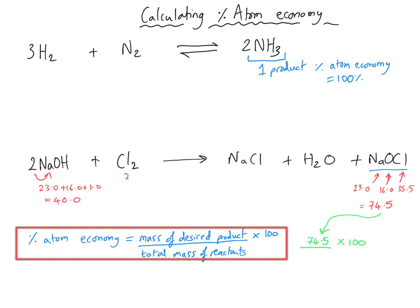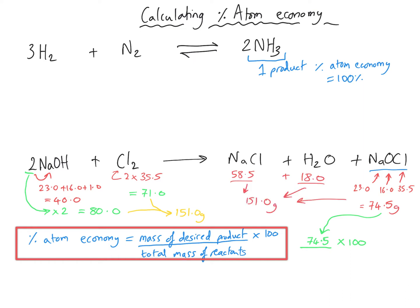The MR of sodium hydroxide is 40, but there are two of them, and the MR of chlorine is 71. So we add 80 to 71 and get 151 grams total for the reactants. Incidentally, this equation is balanced because the sodium chloride and the water add together to top the sodium chlorate up to 151 grams. So we've got 151 grams of reactants and 151 grams of products. All we needed was the MR of sodium chlorate — 74.5 — divide it by 151, multiply by 100, and we get a percentage of 49.3%. Always give your percentages to one decimal place. So just under half of the starting materials we've paid for are turned into desired product — there's greater than 50% waste.